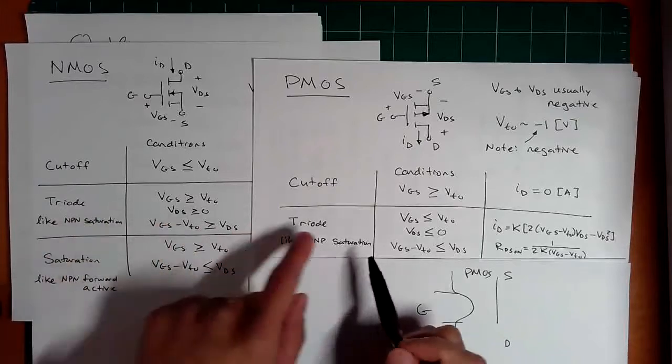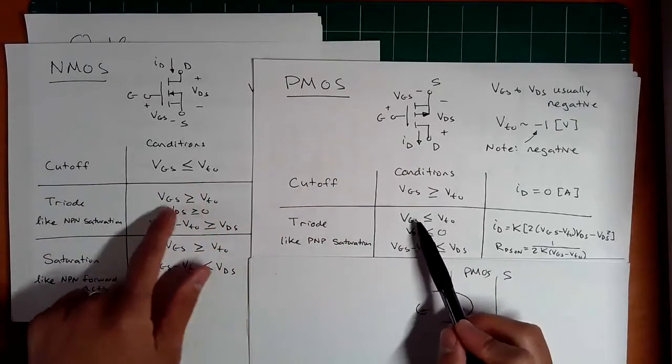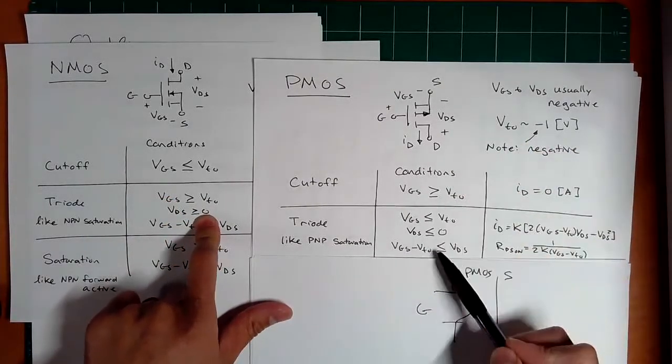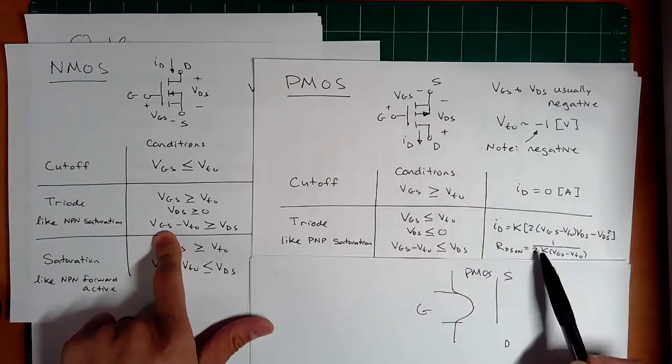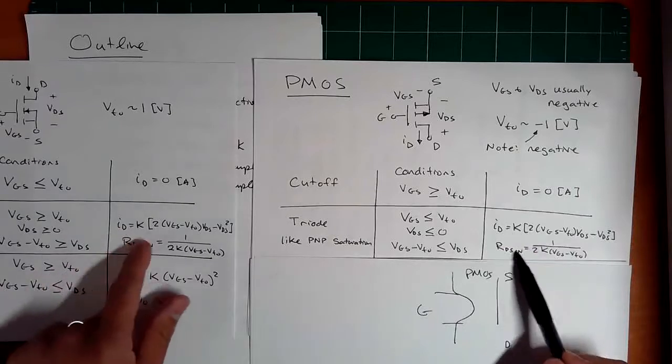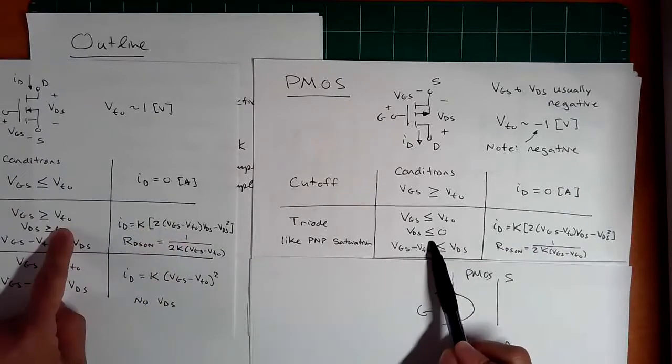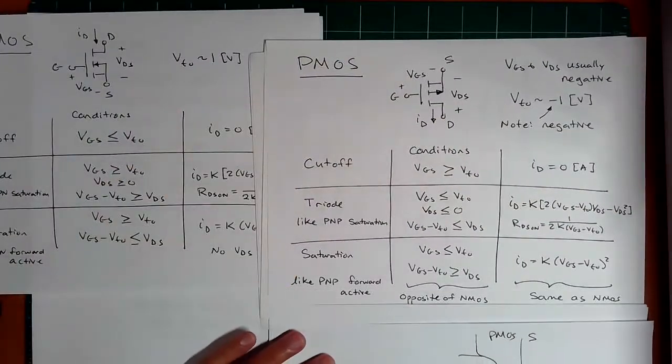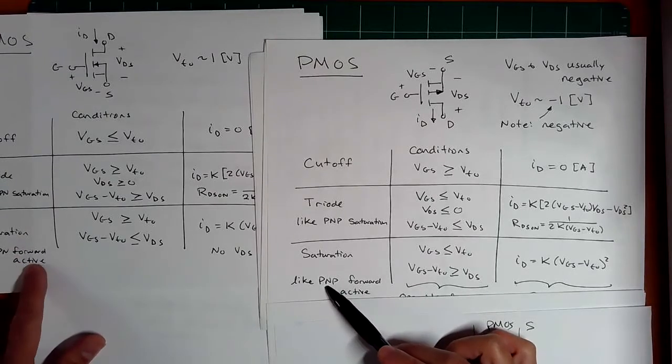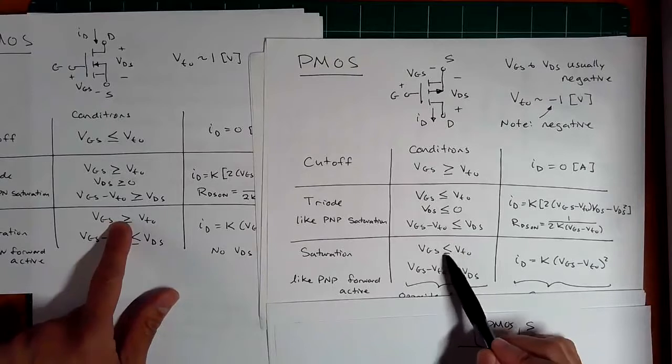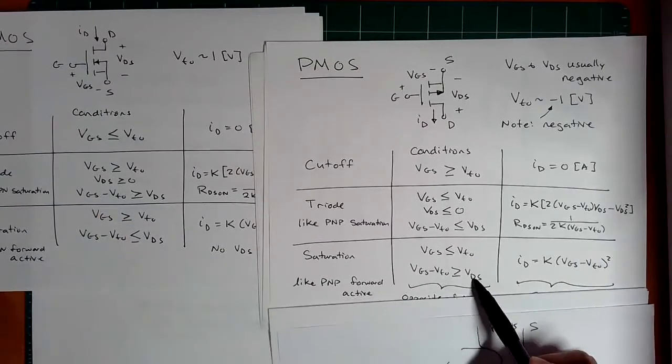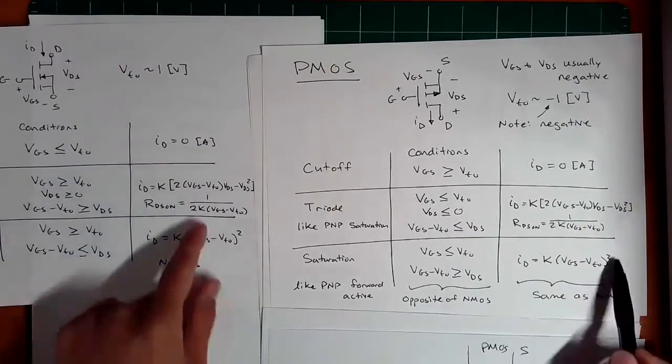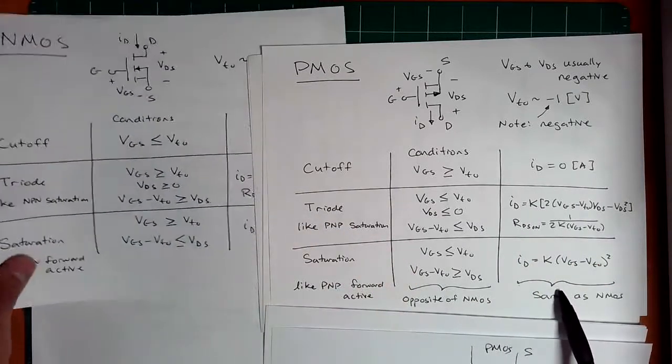So then these are the triode or fully on conditions. And notice these are flipped. So here VGS over here is less than VTO, opposite of the NMOS. VDS is less than zero. So that means you have a high voltage here. And VGS minus VTO is less than VDS. So you're somewhere in the middle. And in this case, you have exactly the same current relationship. Notice these two current equations are exactly the same. So if these are flipped, these are the same. And this is basically the fully on situation. And the last part here is kind of the in the middle one. So the saturation or like PNP or NPN-forward active. Again, these are flipped, these conditions. VGS is less than VTO, opposite of this, and VGS is greater than VDS. So all these terms in here, all these conditions are opposite of NMOS, but then all these current equations are exactly the same as the NMOS. So I hope this comparison or this chart summarizes the conditions.